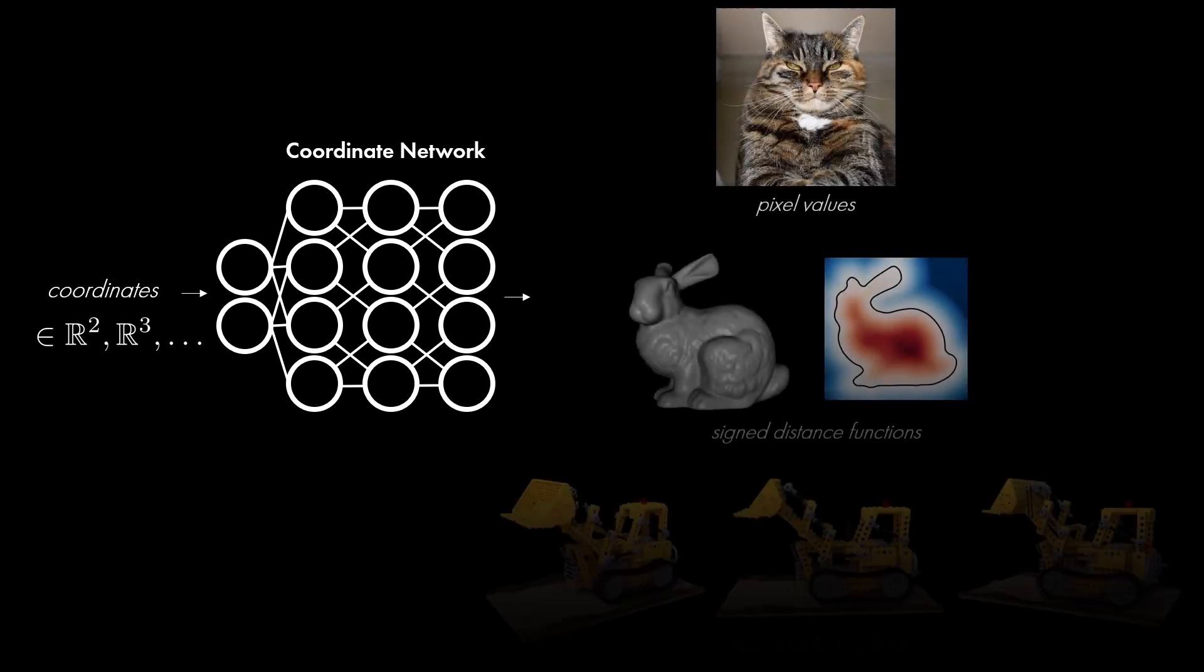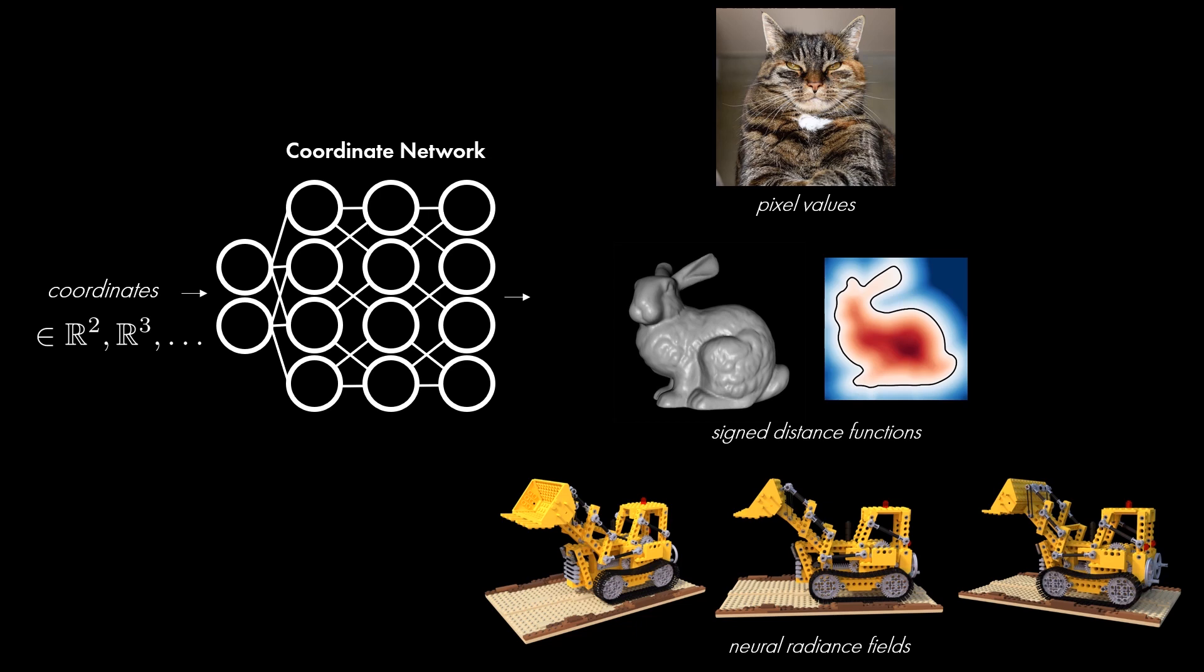Coordinate networks are fully connected neural networks that map input coordinates to an output signal value. These networks are commonly trained to overfit a particular signal, such as pixel values in an image, neural radiance fields, or 3D shapes through a signed distance function.